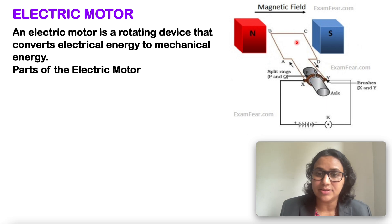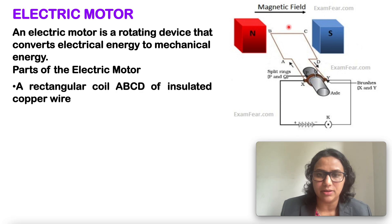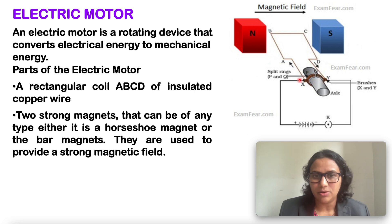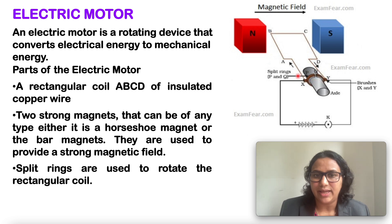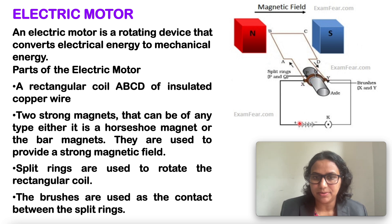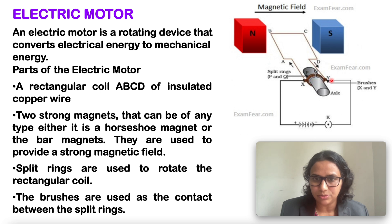An electric motor, as shown in the figure, consists of a rectangular coil ABCD of insulated copper wire. The coil is placed between the two poles of a magnetic field such that the arms AB and CD are perpendicular to the direction of the magnetic field. The ends of the coil are connected to the two halves P and Q of a split ring. The inner sides of these halves are insulated and attached to an axle. The external conducting edges of P and Q touch two conducting stationary brushes X and Y respectively.